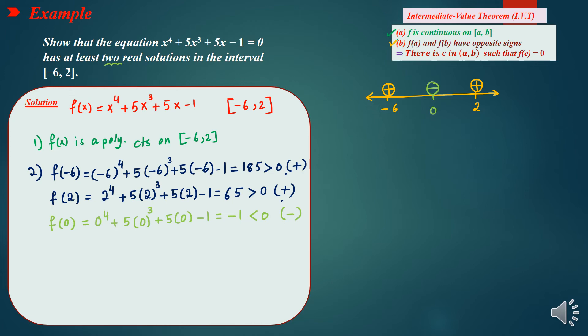Since f is continuous, and f(negative 6) is positive while f(0) is negative, they have opposite signs. By the IVT, there exists c1 between negative 6 and 0 such that f(c1) equals 0. In the second subinterval from 0 to 2, f(0) is negative and f(2) is positive, so there exists c2 between 0 and 2 such that f(c2) equals 0.